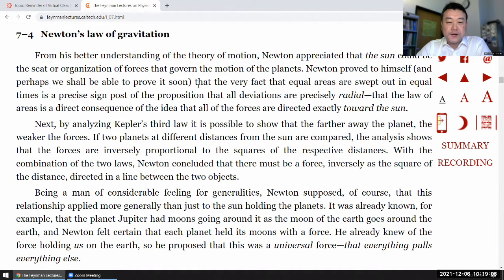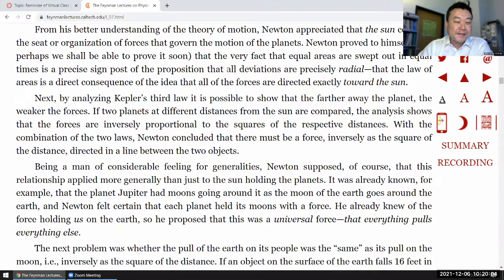So it says, from his a better understanding of the theory of motion, Newton appreciated that the sun could be the seat of organization of forces that govern the motion of the planet. Newton proved himself and perhaps we shall be able to prove it soon. And by the way, it's quite, you have to be really good at calculus to be able to prove this. That the very fact that equal areas are swept out in equal times is a precise signpost of the proposition that all deviations are precisely radial. That the law of areas is a direct consequence of the idea that all of the forces are directed exactly towards the sun.